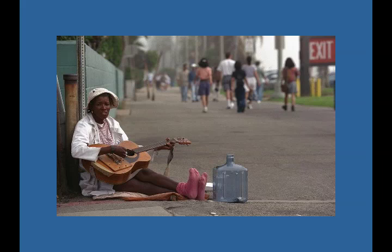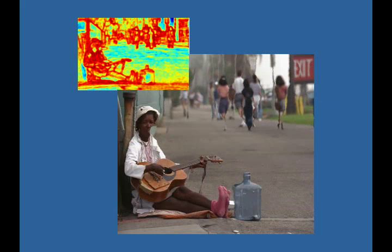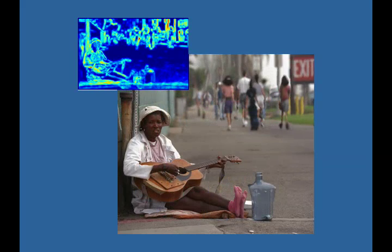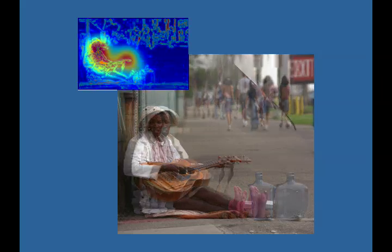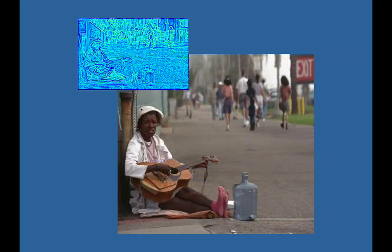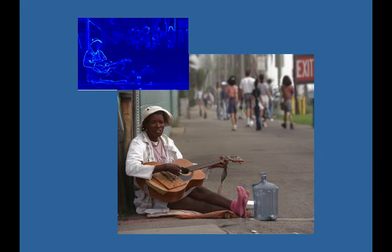We have tested different possible energy functions for retargeting, such as entropy, saliency, histogram of gradient direction, and eye movement measurements. The results depend on the given image, but simple gradient magnitude often gives satisfactory results.